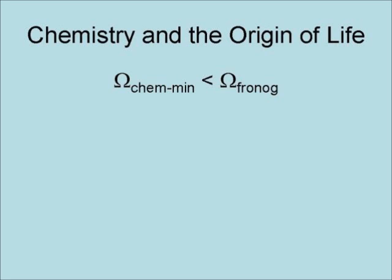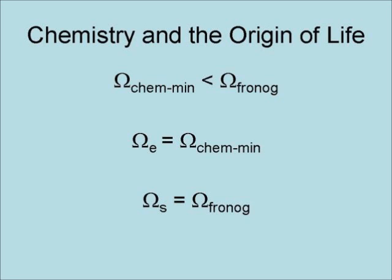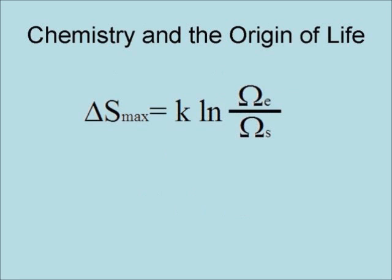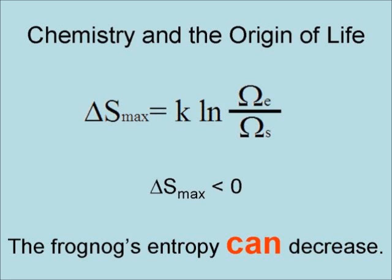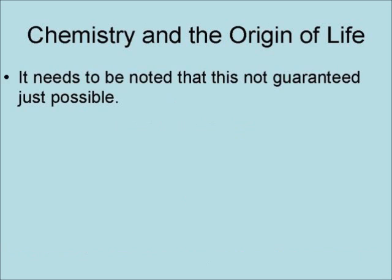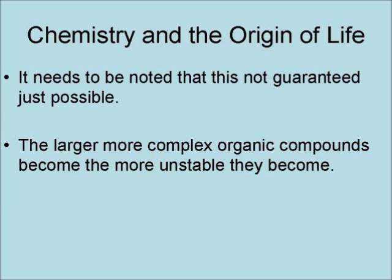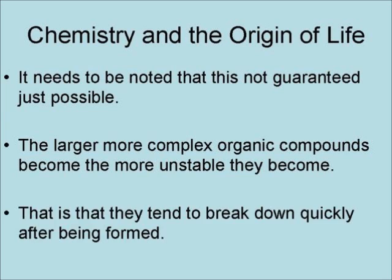As a result, it is safe to conclude that chemistry can apply energy in a manner more ordered than frog nog or any prebiotic soup. This means omega-chem-min is less than omega frog nog, such that Ω_E equals omega-chem-min and Ω_S equals omega frog nog. Applying this to the formula for the change in entropy, we get delta S max is less than zero. As a result, the frog nog's entropy can decrease — though this is not guaranteed, just possible. Furthermore, the larger and more complex organic compounds become, the more unstable they become — they tend to break down quickly after they are formed.